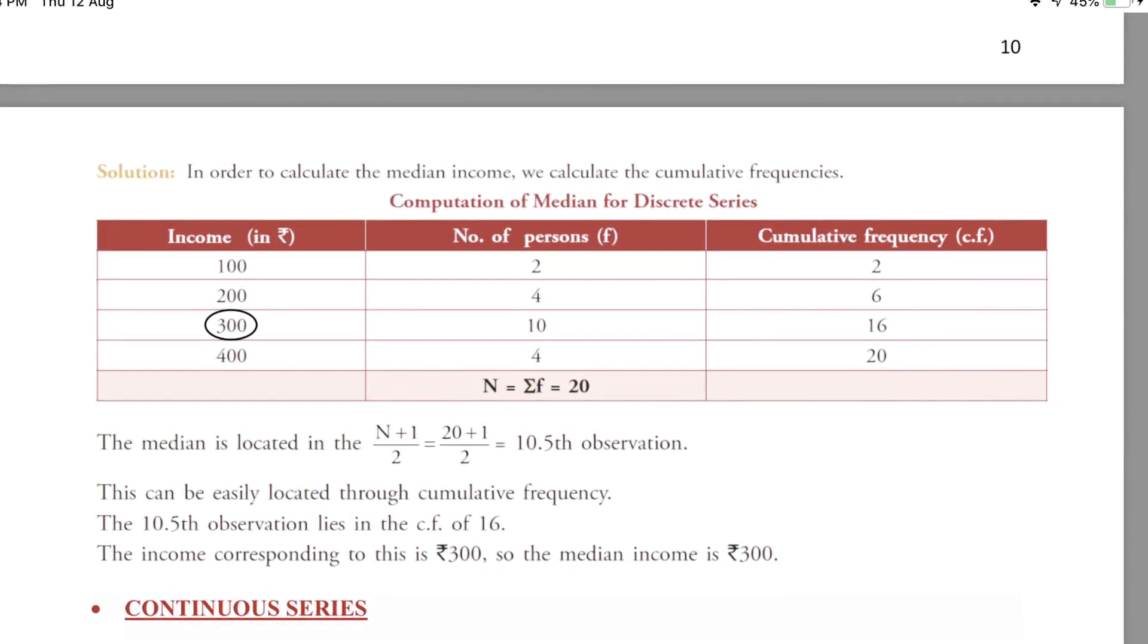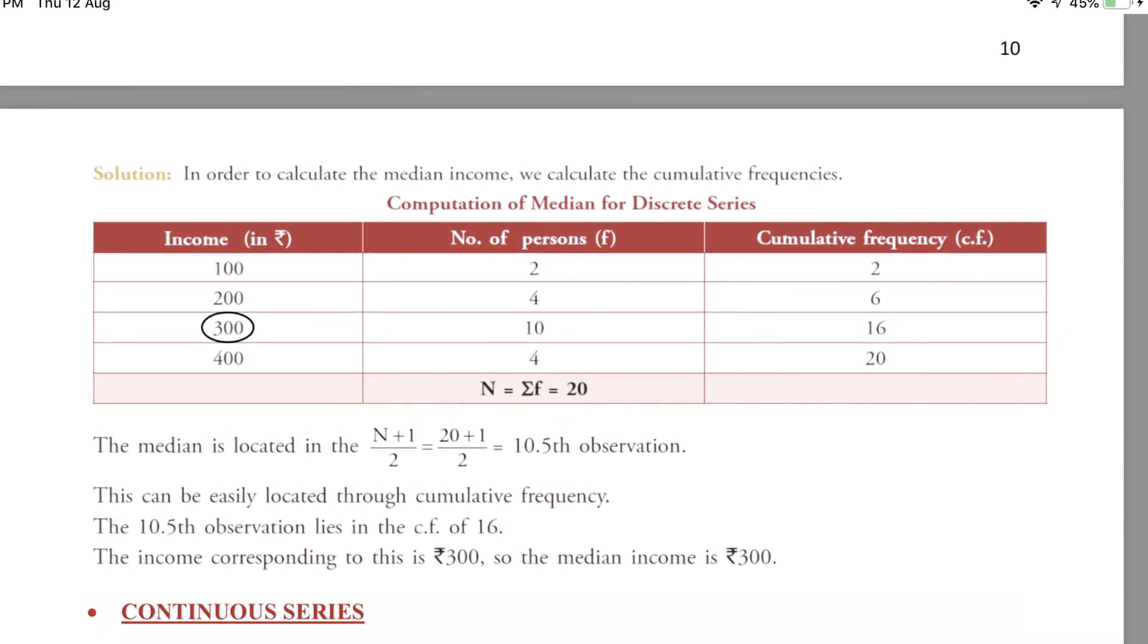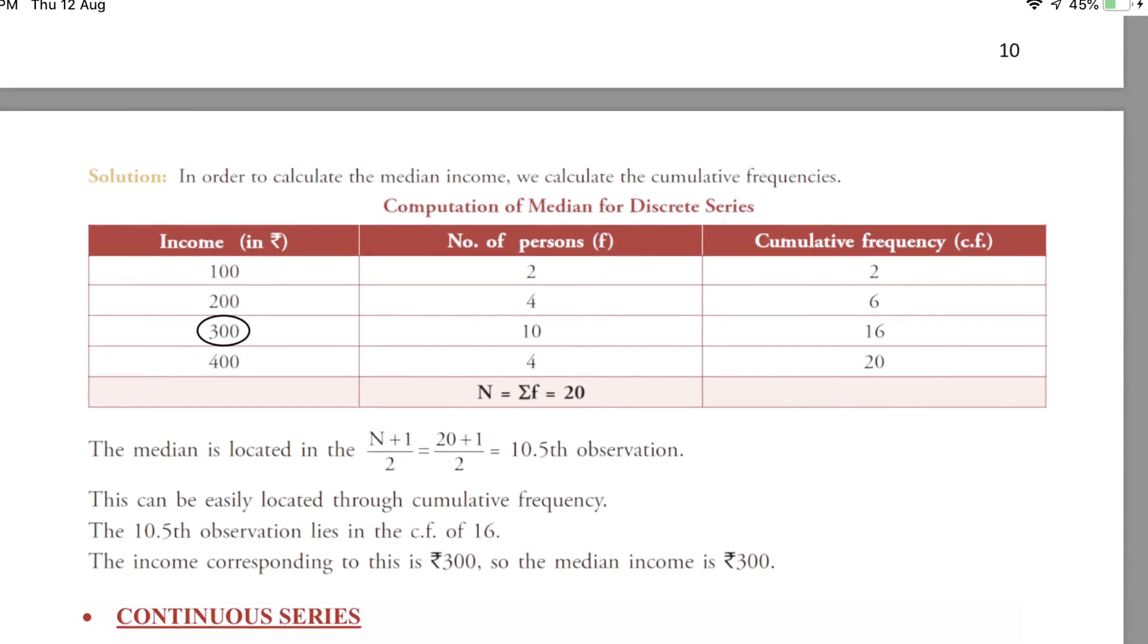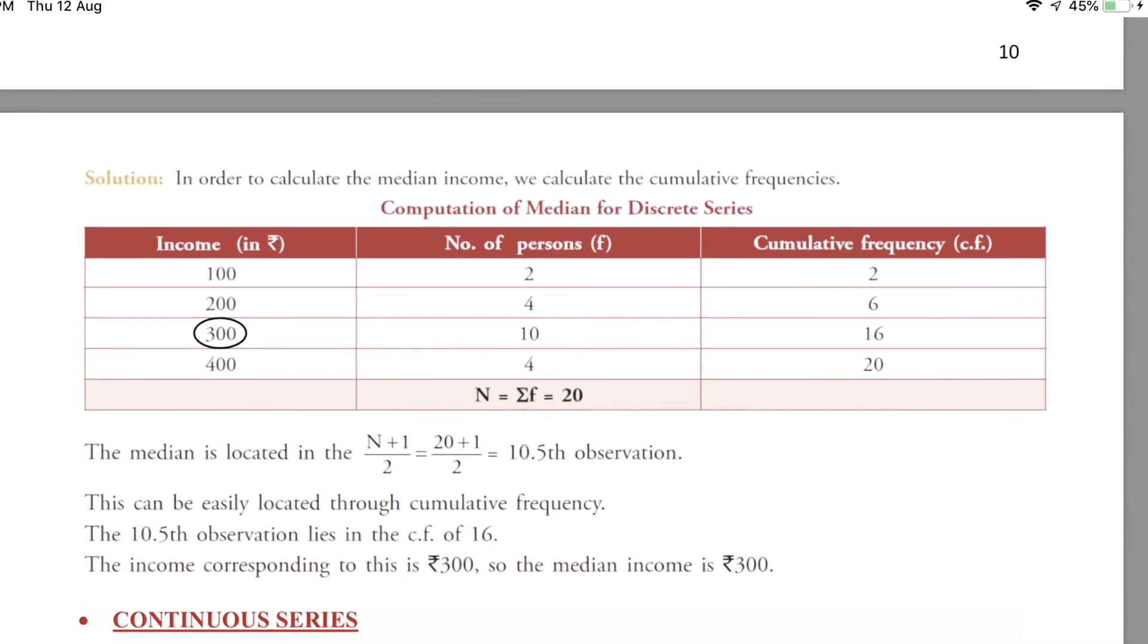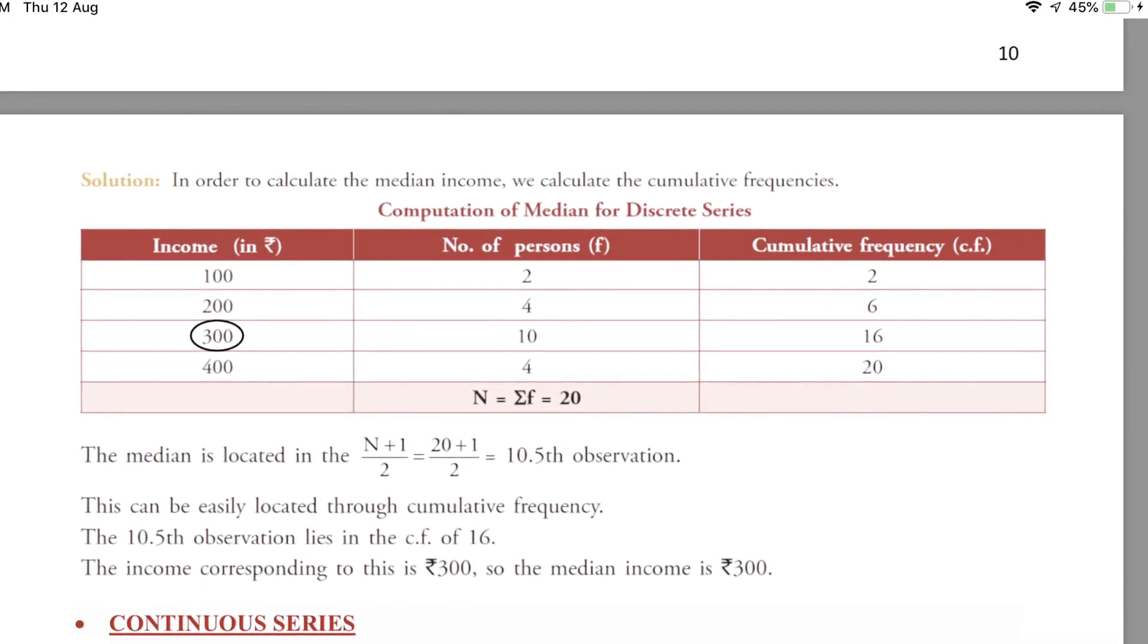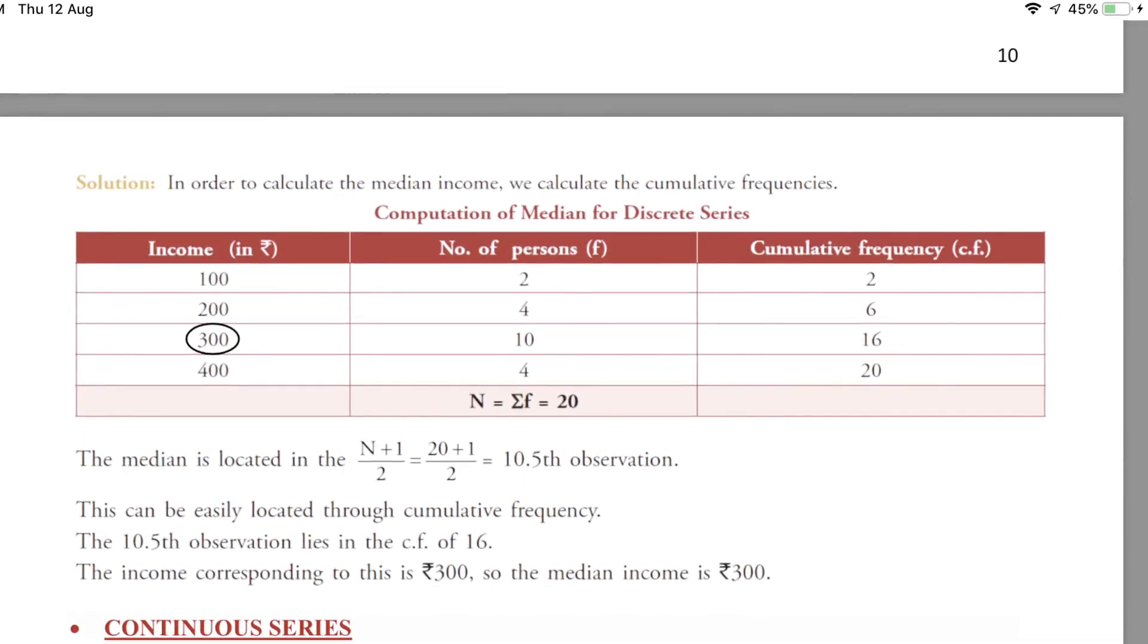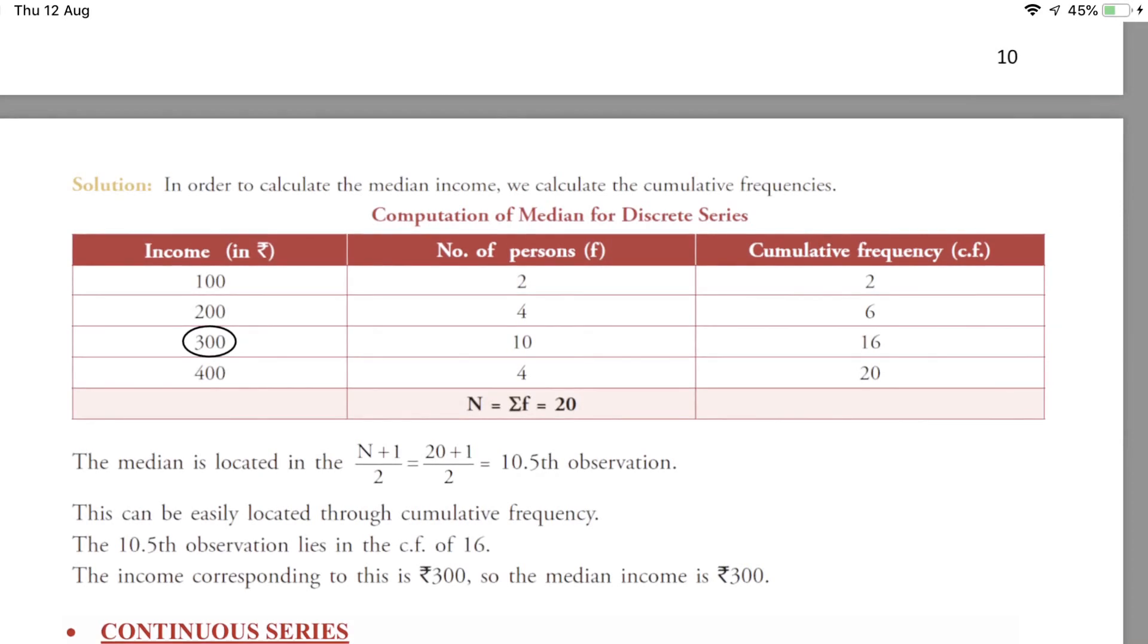In the above example, sigma f is equal to 20. Now we apply the formula, we get n plus 1 upon 2 is equal to 20 plus 1 upon 2 is equal to 10.5 observation. Now we observe that 10.5 observation lies in the column of cumulative frequency 16. We follow the line to the income group and we observe that 300 is the median income of the given data.